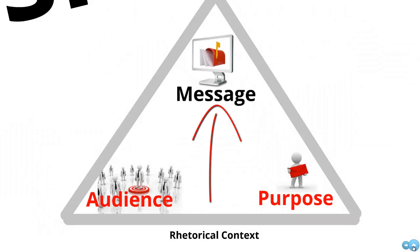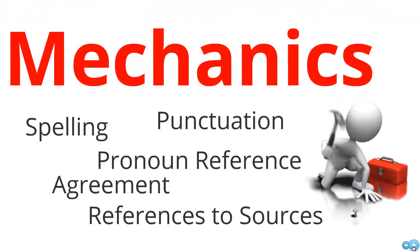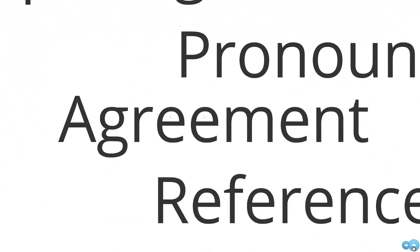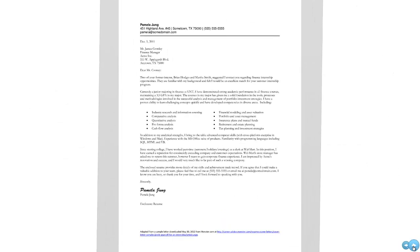My primary interest in this tutorial is the message itself. Effective mechanics can only be judged by taking into account the writer's purpose and audience. If you haven't listened to the tutorials on rhetorical context yet, you should. This tutorial focuses on the mechanics of subject-verb agreement, and we're going to think about this in the context of professional writing.